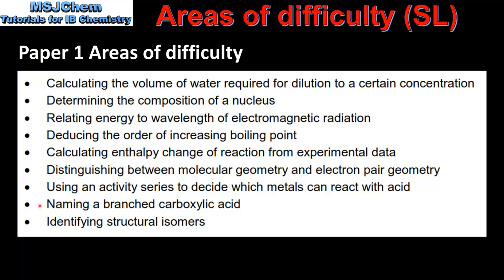Next, naming a branched carboxylic acid. Naming carboxylic acids is fairly straightforward. If they have branches, just remember to start numbering the carbon atoms from the carbon atom in the carboxyl group. We also have identifying structural isomers. Structural isomers have the same molecular formula but different structural formulas. An example is pentane and 2-methylbutane — both have the same molecular formula but 2-methylbutane is a branched alkane.